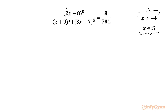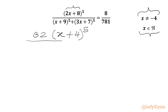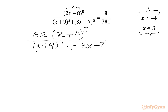Let's get started by taking 2 common from this bracket. So it will come out as 2 to the power 5, which is 32. So we write in the bracket (x+4) to the power 5, over (x+9) to the whole power 5, plus (3x+7) to the whole power 5, equal to 8 over 781.